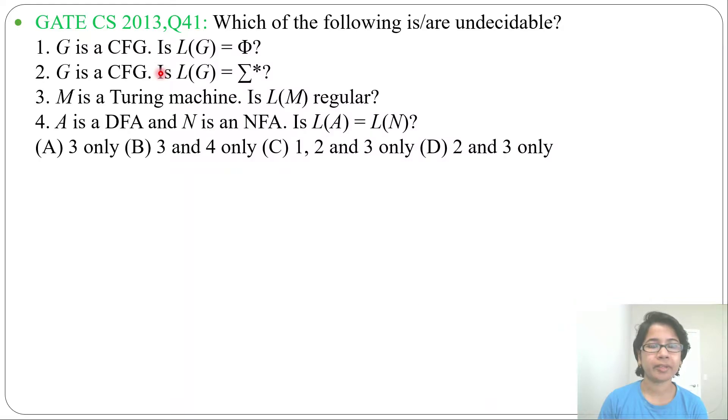Let's solve the next question on undecidability. This question was asked in GATE CS 2013, Question 41. Which of the following is/are undecidable? Statement 1: G is a CFG, is L(G) = φ?